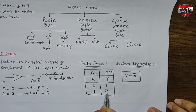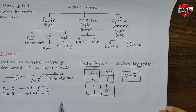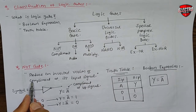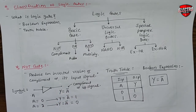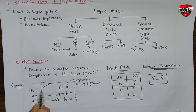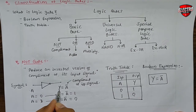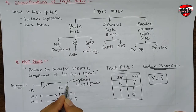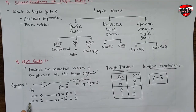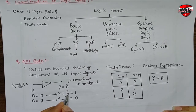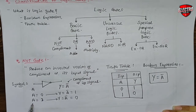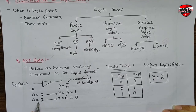So, the NOT gate is one type of basic gate. Its function is to produce an inverted version or complement of its input signal. The symbol of the NOT gate is a triangle with one bubble on its head. If input signal is A, then Y is equal to the complement of A. The bar sign indicates complement of input signal A. If A is equal to 0 then Y is equal to 1, and if A is equal to 1 then Y is equal to 0.